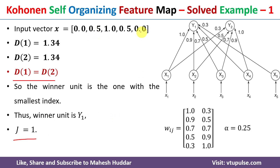The input vector is mapped to cluster 1. Once mapped, we need to update the weight matrix with respect to cluster 1 — that is, the first column of weights needs to be updated.